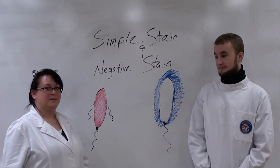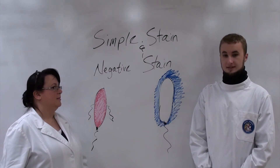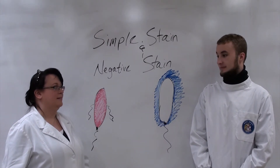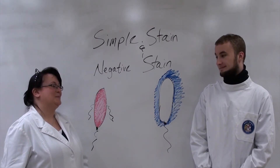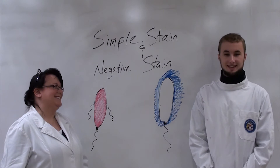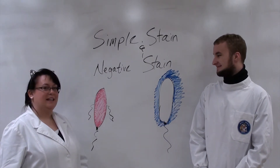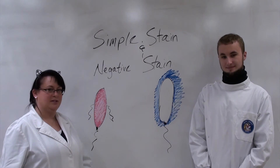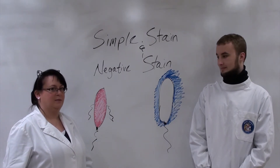Based on the visualization we can tell basic morphology — whether it's a cocci, a bacillus, or a spirochete. So bacteria have a slightly negative charge, so we use different charges on the stains based on what we want to see from the organism.